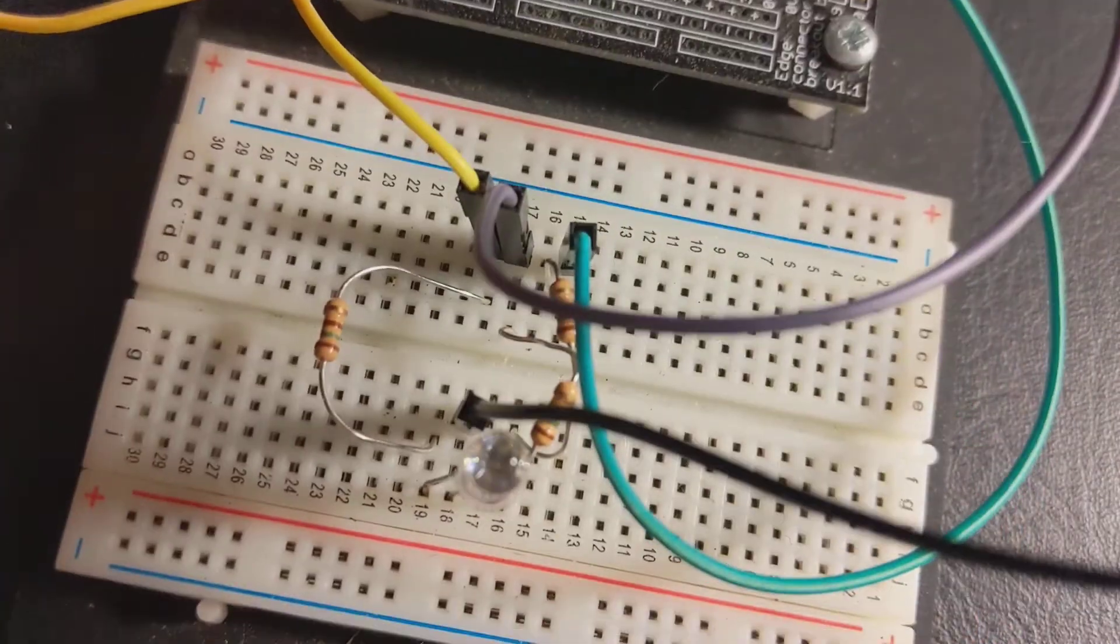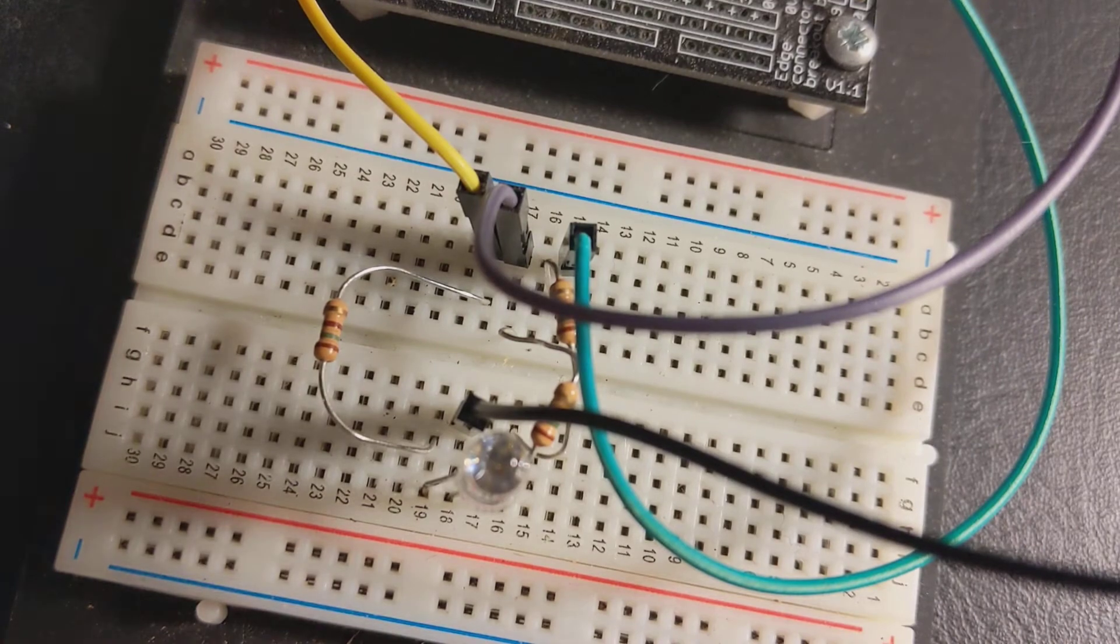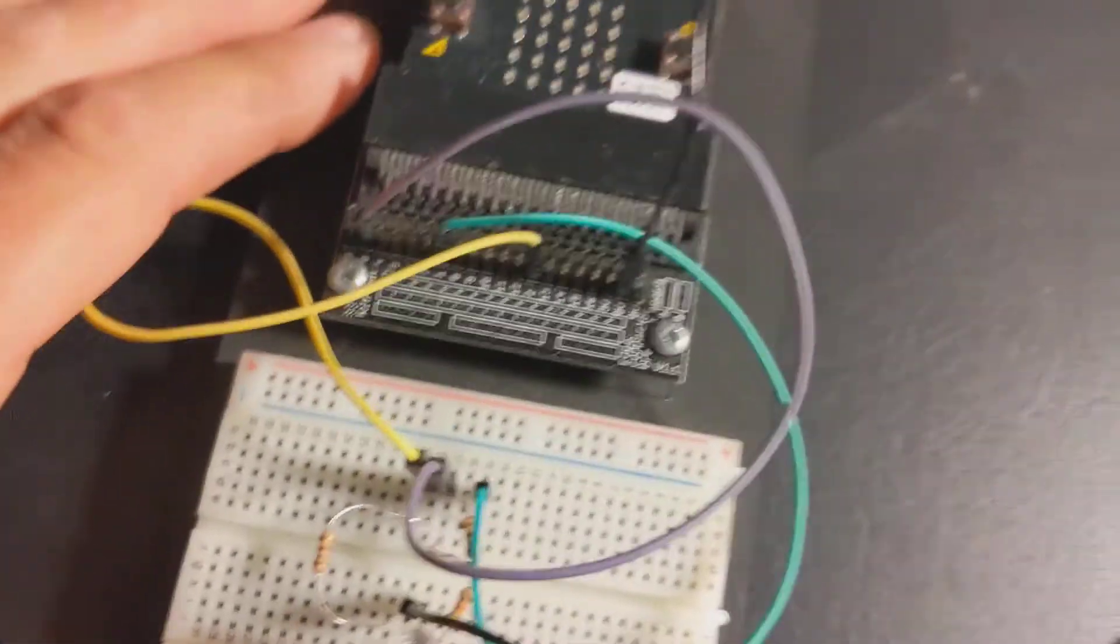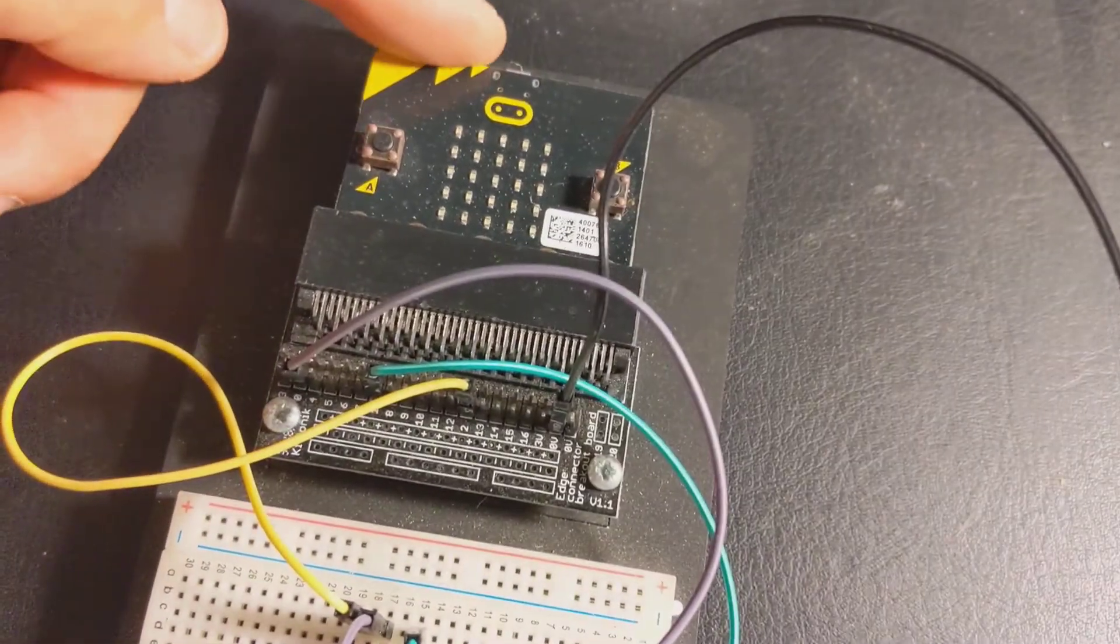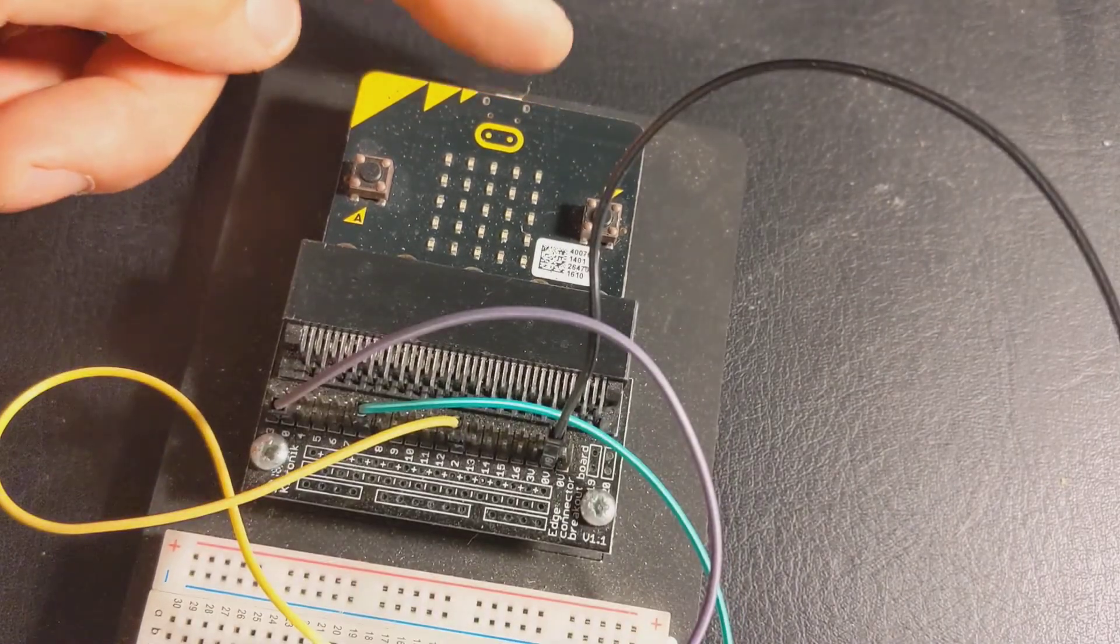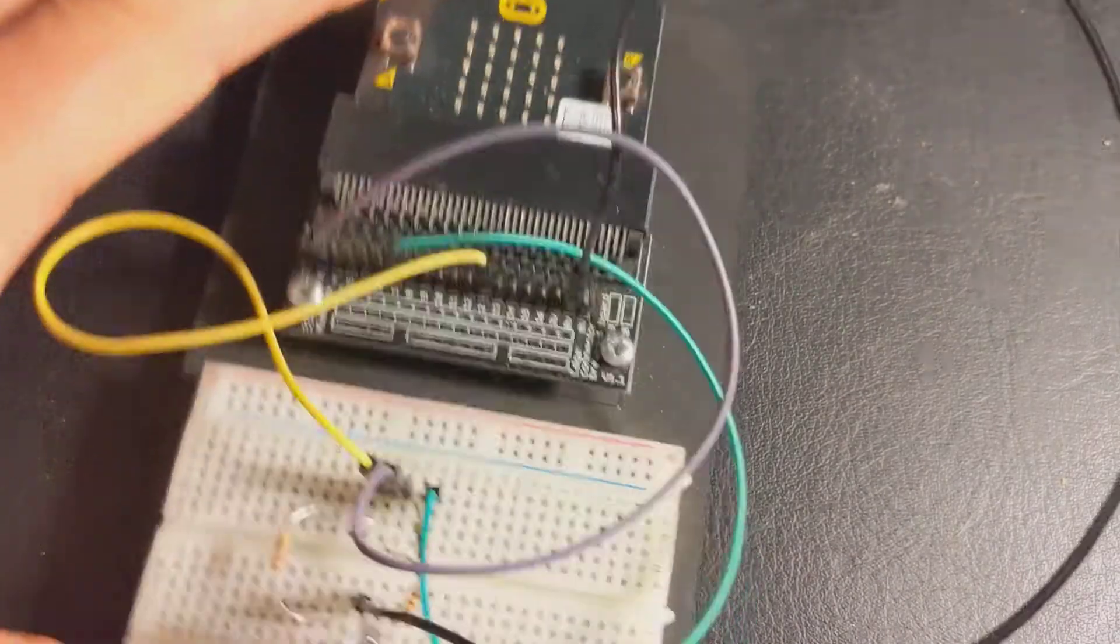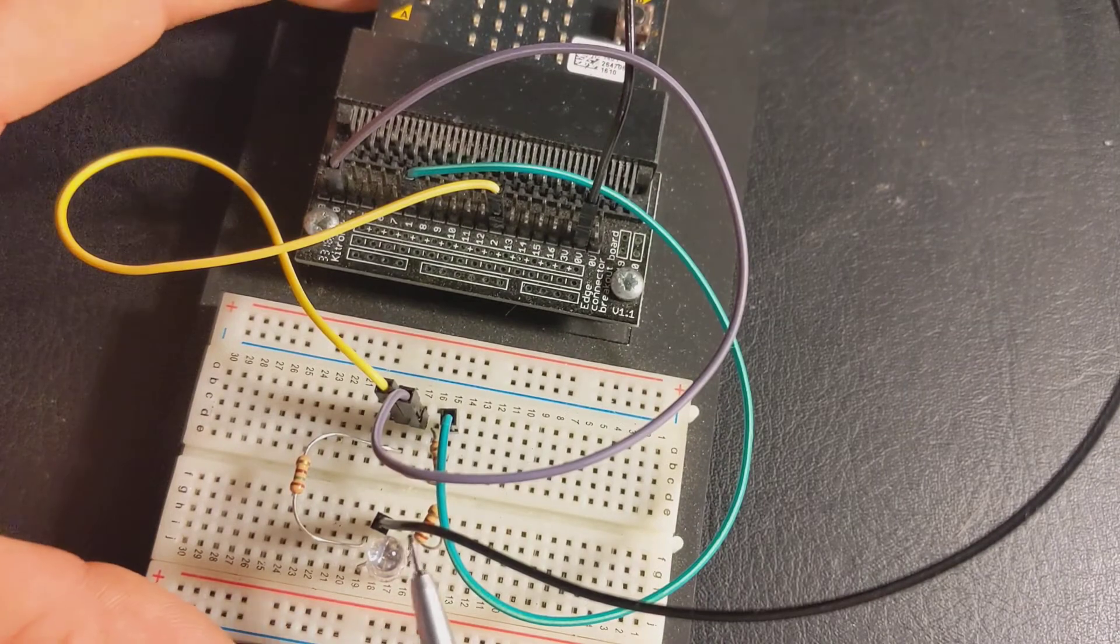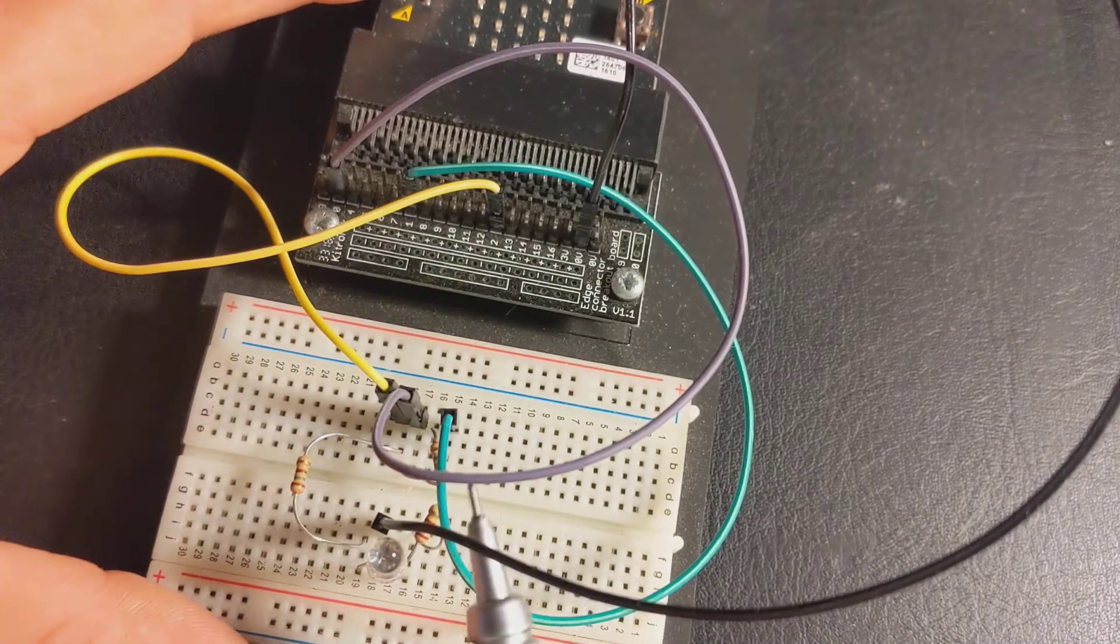So that system now is ready for me to provide a bit of code to. All I need to do is connect the programming cable and a power lead to the microbit to power out the microbit. And with this system, an LED, it's fairly low power, so I can power that directly from the microbit.